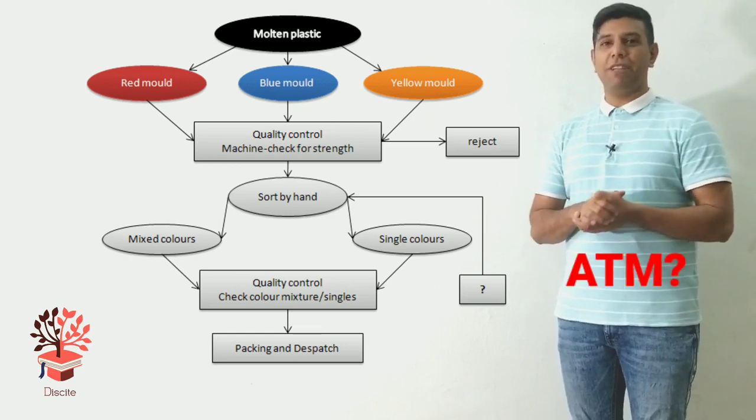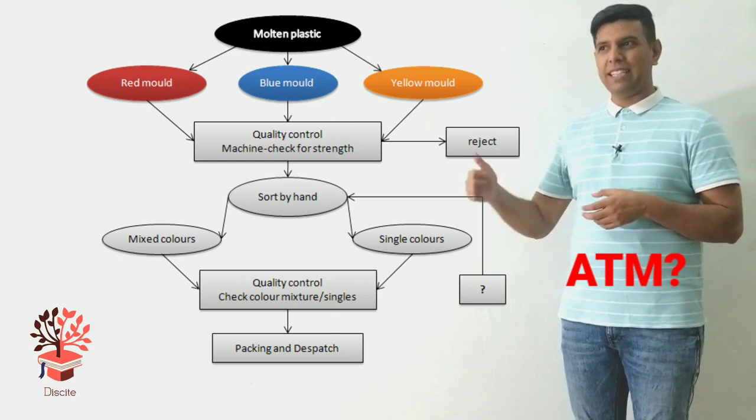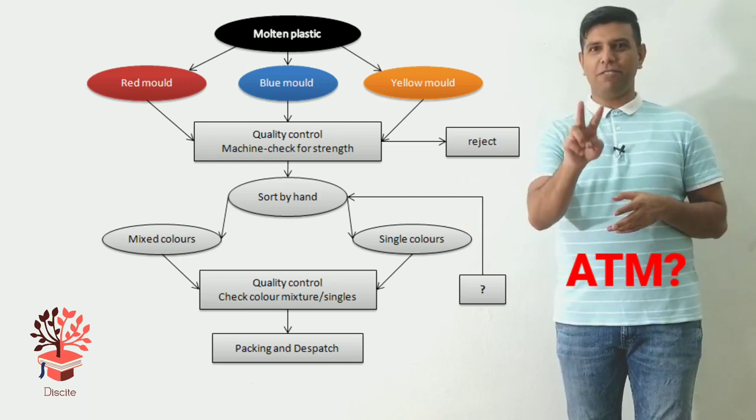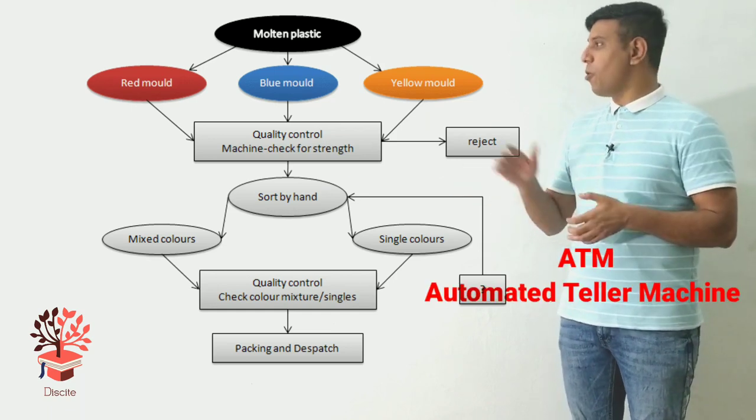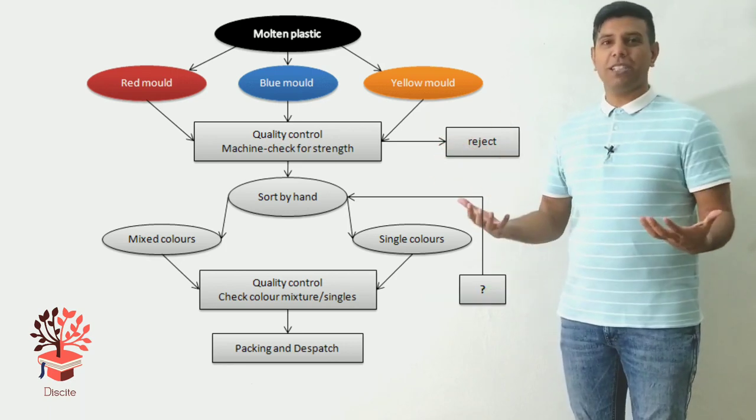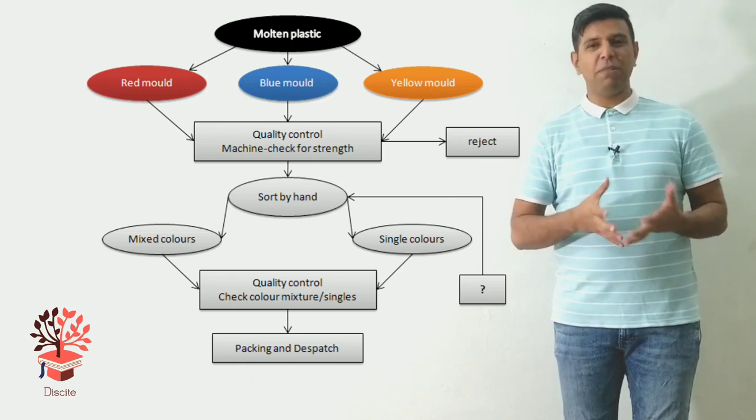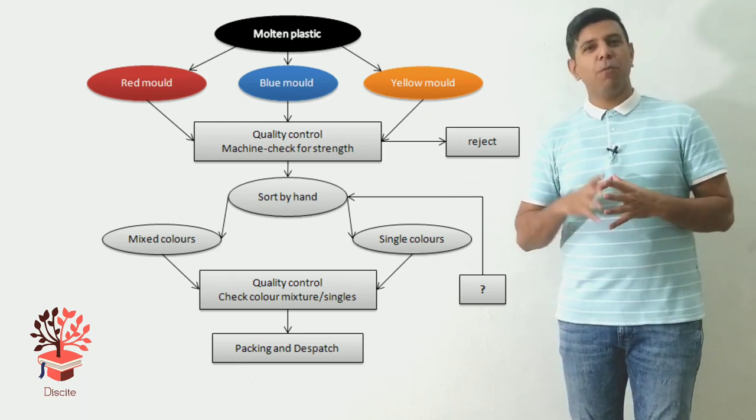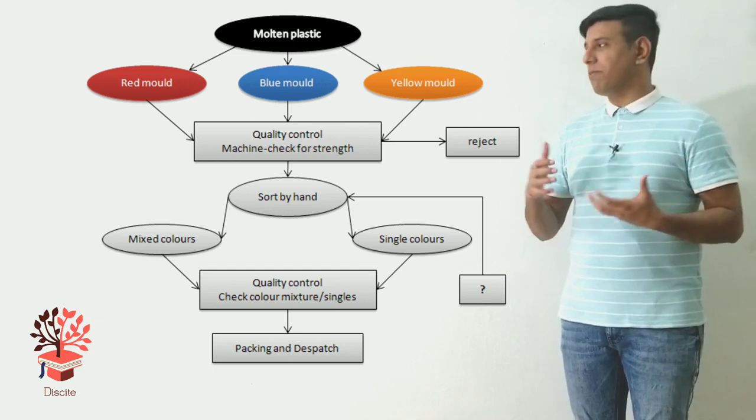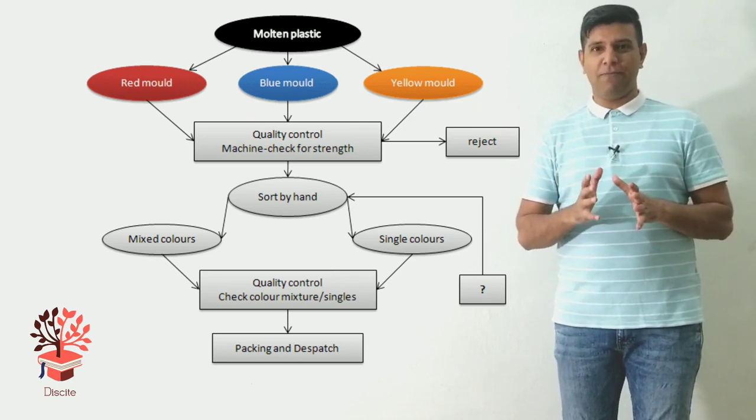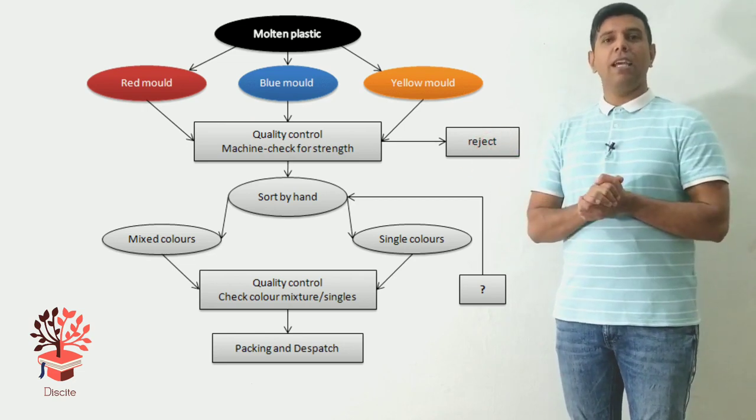For example, we have the ATMs. What does ATM stand for? That is an automated teller machine. So the product that is ready is now going through a quality control. Automatic. It means robots are probably doing it. We are not going to speculate in the writing. Remember one thing: in graph writing or in report writing, you cannot speculate. You only talk about what is given here in black and white.